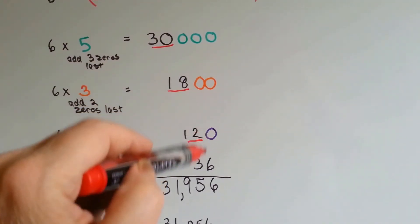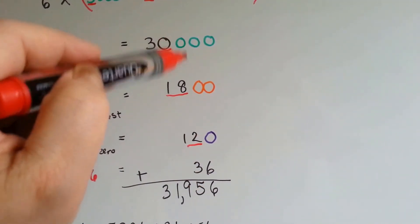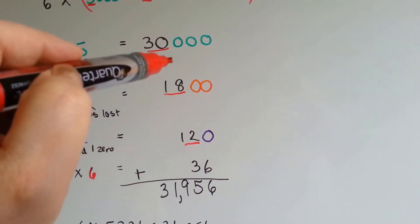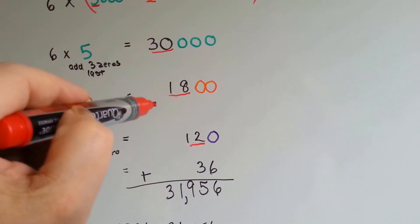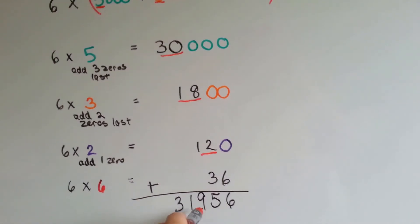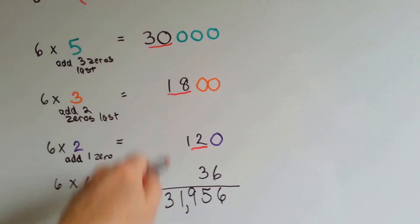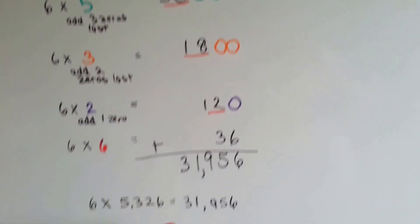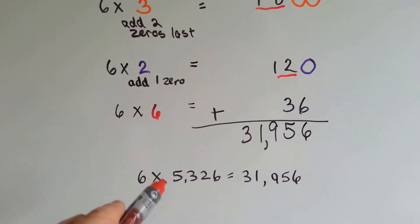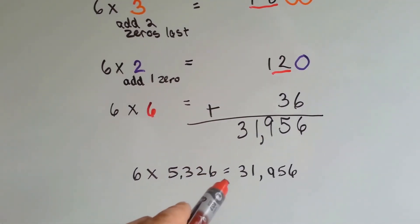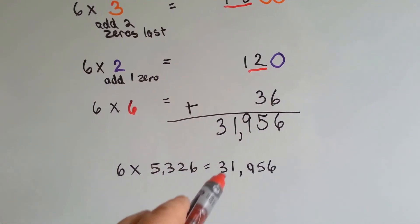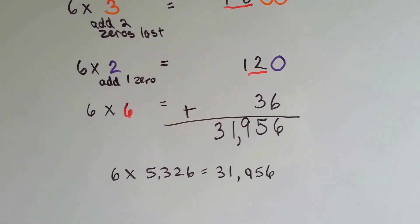0 and 0 and 0 and 6 is 6. 0, 0, 2, and 3 is 5. 0, 8, 1 is 9. 0 and 1 is 1, and we drop the 3 down. So 6 times 5,326 is equal to 31,956.